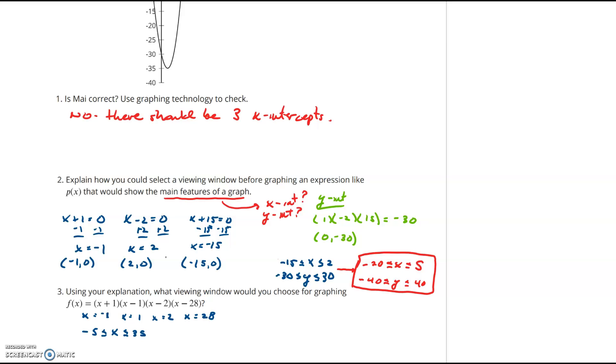Now, remember our y-intercept. To find the y-intercept, we just take each one of these constant values and multiply them. So positive 1 times negative 1 times negative 2 times negative 28. And remember, these numbers are coming from here: positive 1, negative 1, negative 2, negative 28. And when we multiply that out, positive 1 times negative 1 times negative 2 times negative 28, we get negative 56.